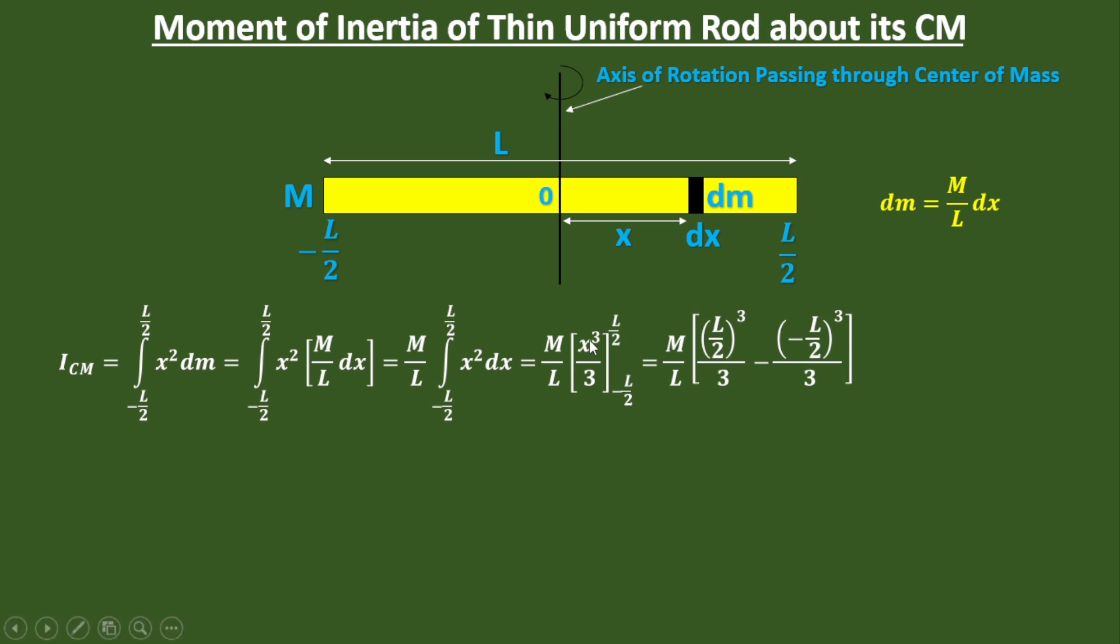We have to plug first the upper limit in place of x, that is L by 2 whole cubed, and then minus, we have to plug the lower limit in place of x, that will be minus L by 2 whole cubed.